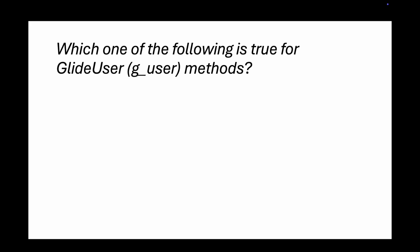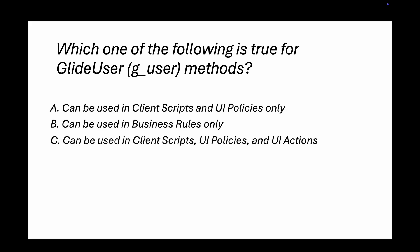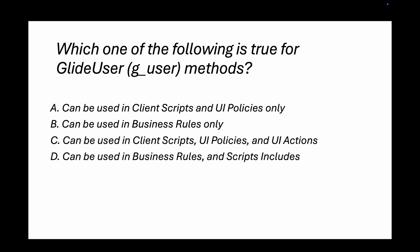Question number four: which one of the following is true for the GlideUser (g_user) method? Options are: can be used in client script and UI policy; can be used in business rule only; can be used in client script, UI policy, and UI actions; can be used in business rule and script include. GlideUser is a client-side method, so it cannot be used in a business rule — that eliminates options B and D.